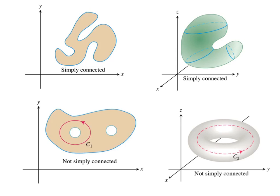So for simply connected, on the upper left we have a simply connected example — you can see it's in one piece, and if I looked at any point in this domain, I could put a path and contract that path to a point without ever leaving my domain. Right below it we have an example of something that's not simply connected, where we have basically a hole in our domain, and so if I had a path that went around that hole, I could not contract that path to a point within the domain.